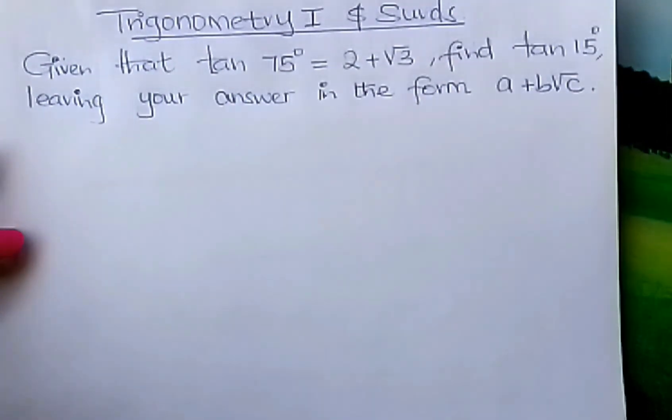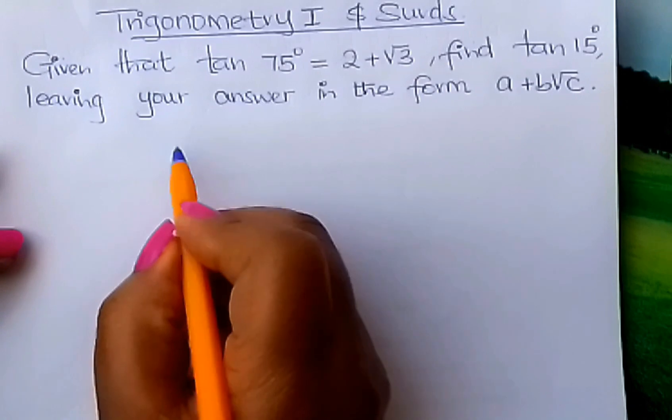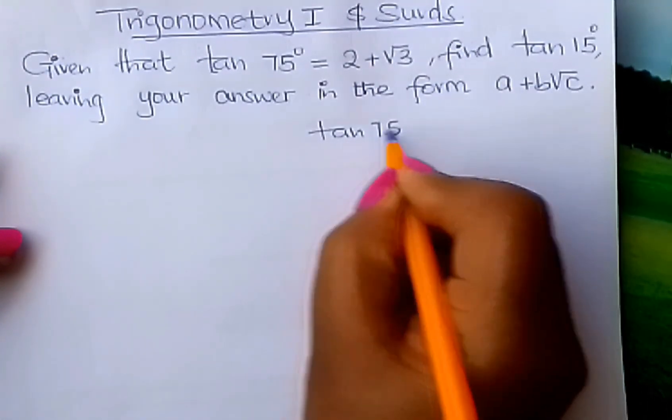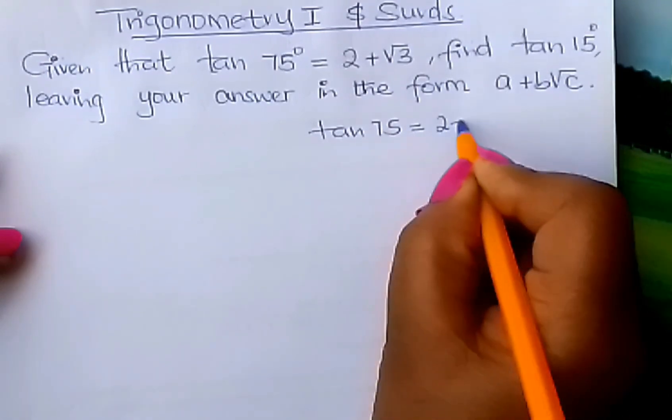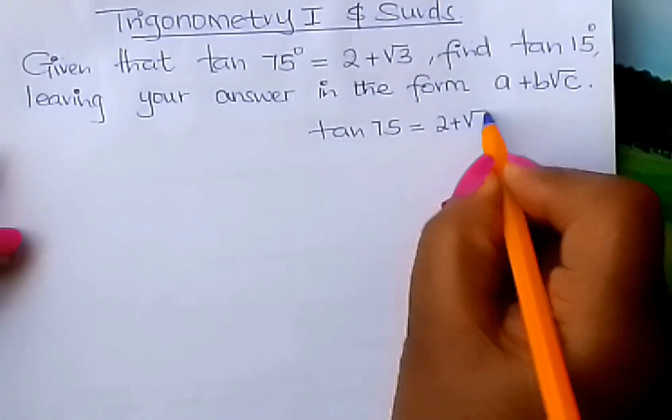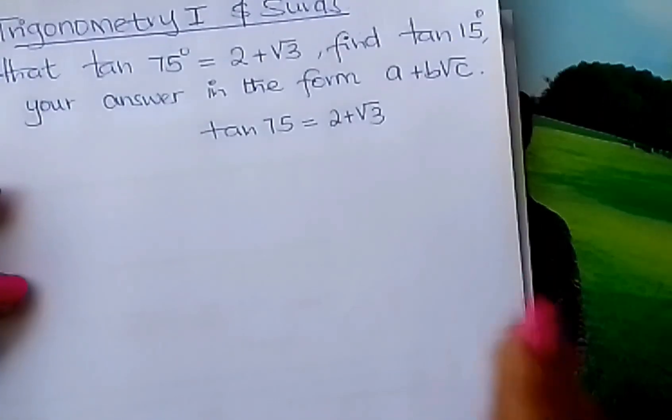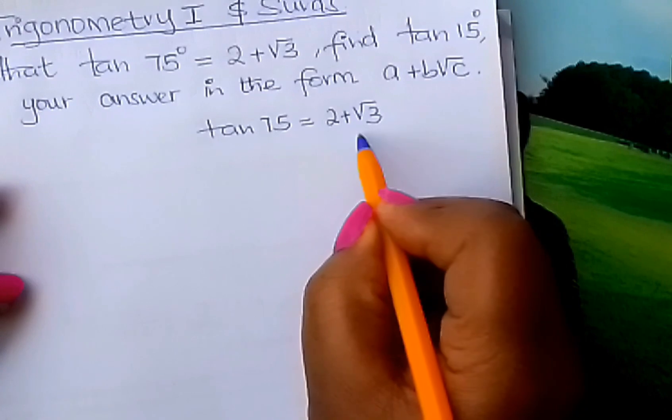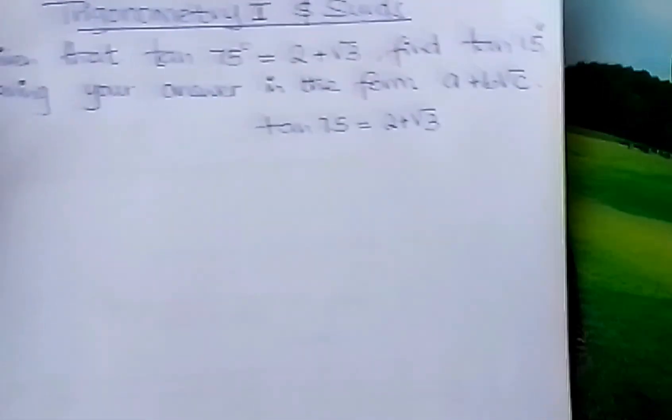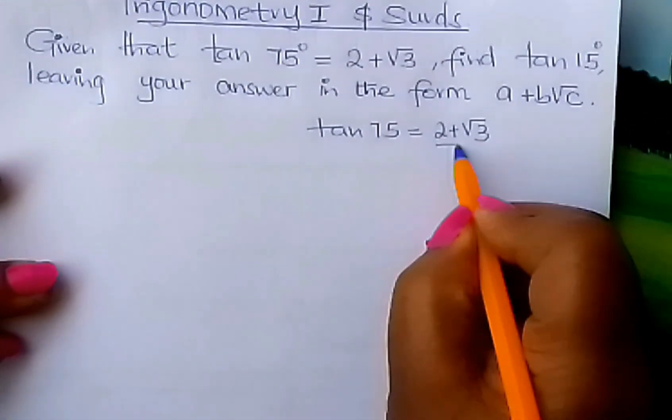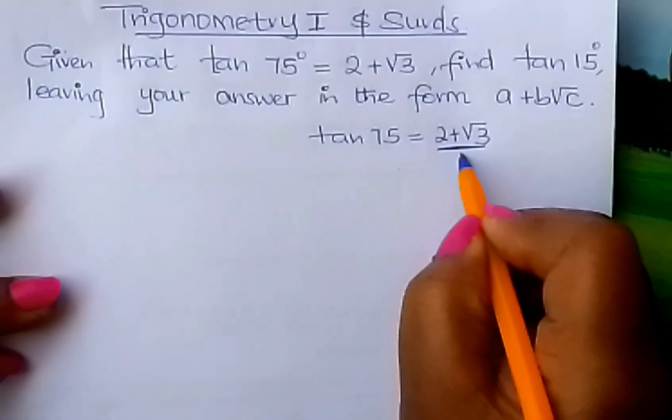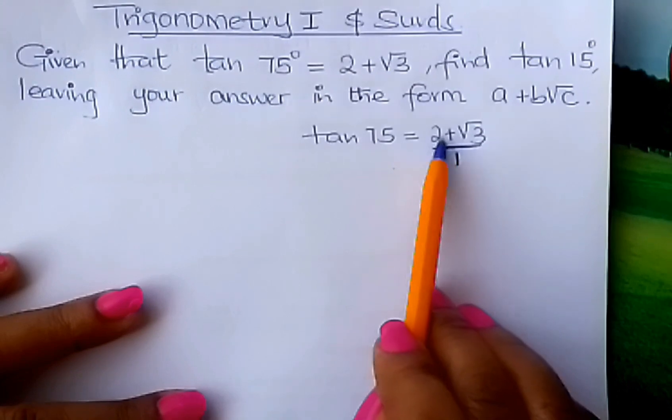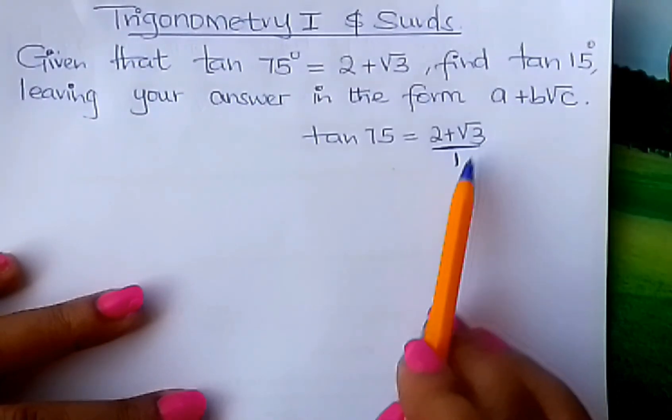So learner, how do you go about this? The first thing that you do is to ask yourself, tan 75° is equal to 2 plus root 3. 2 plus root 3 is a numerator, and we can introduce a denominator 1 there.